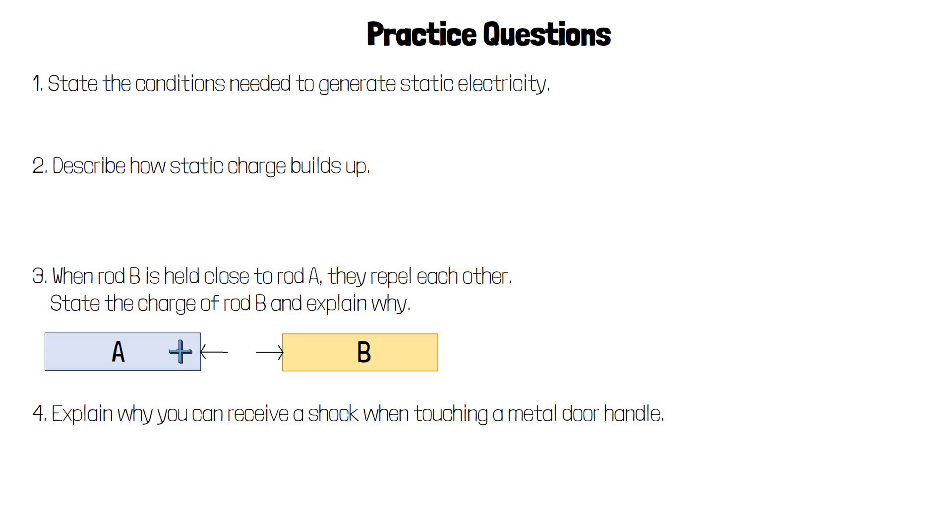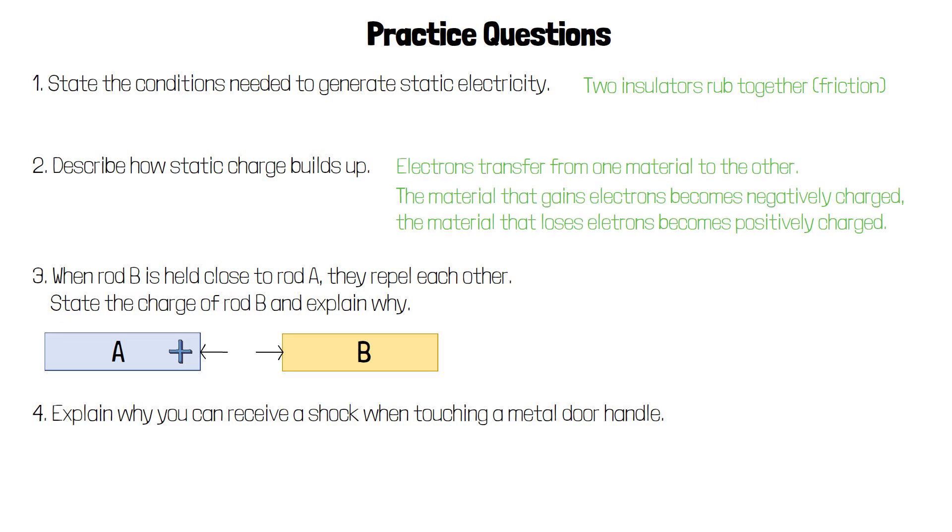Static electricity can be generated when there is friction as two insulating materials rub together. Static charge builds up when electrons are transferred from one material to another. The material that gains electrons becomes negatively charged, while the material that loses electrons becomes positively charged.